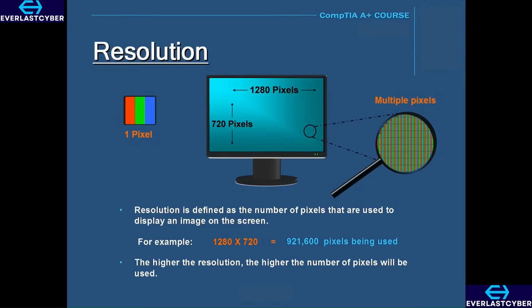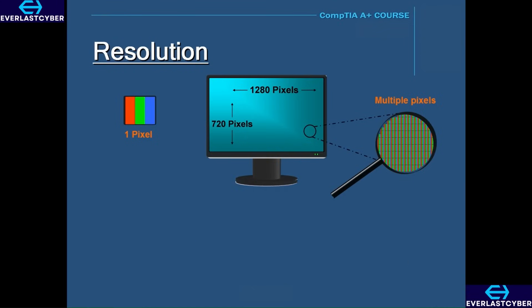The higher the resolution, the higher the number of pixels will be used, which means a clearer and sharper image. Depending upon the hardware and software being used, resolutions can be set anywhere from 640 by 480 up to 1920 by 1200 or more. LCDs produce their best quality image when they are set to their highest resolution, which is called their native resolution.